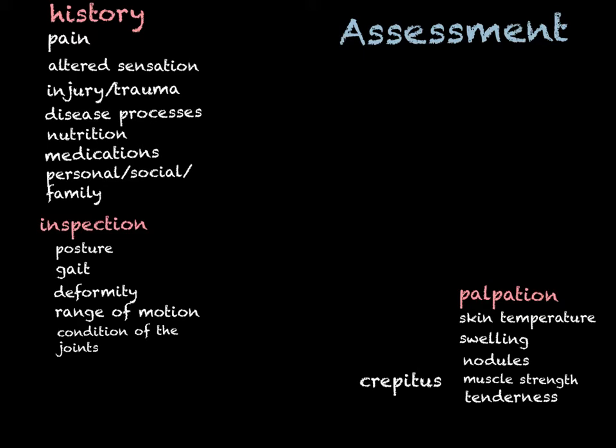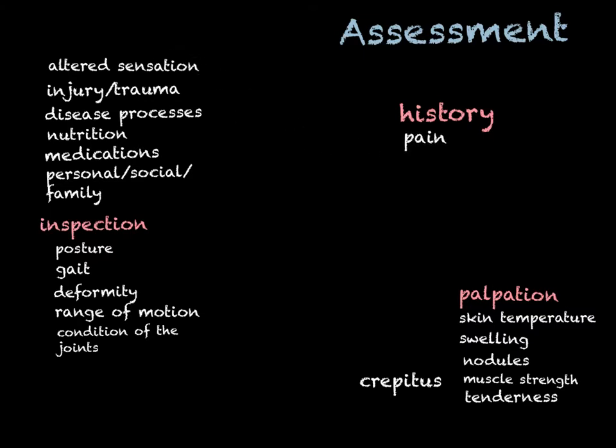The components of the assessment start with the history. The key finding is usually going to be pain, so you want to do a thorough pain assessment. Ask about the location, severity, character, duration, onset, timing, things that make it better, things that make it worse, and things the patient has tried.